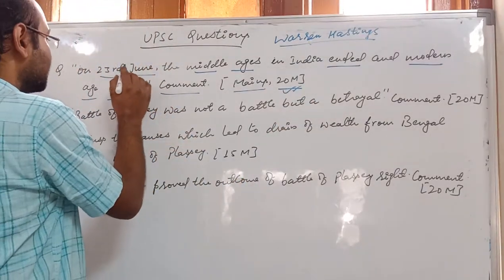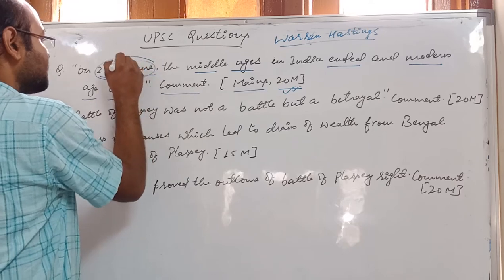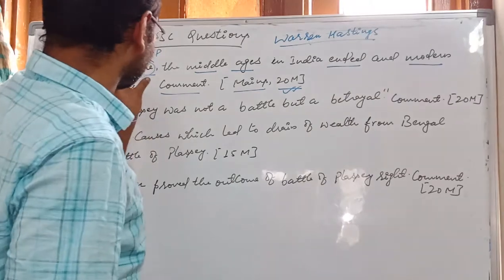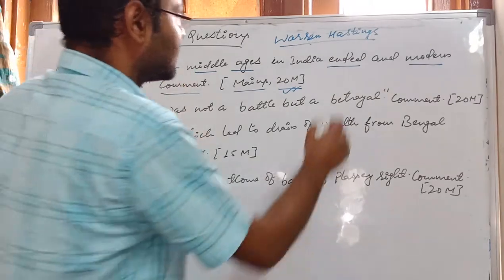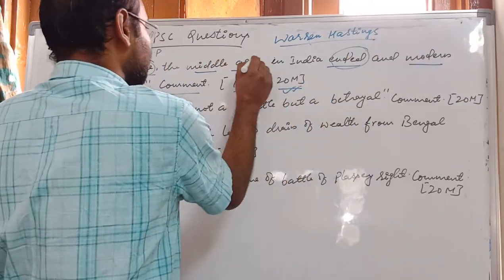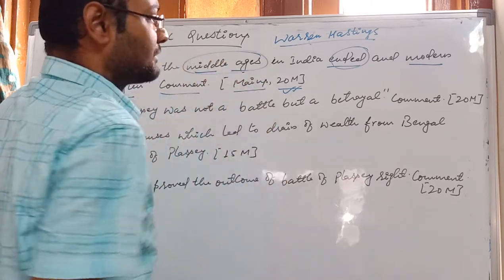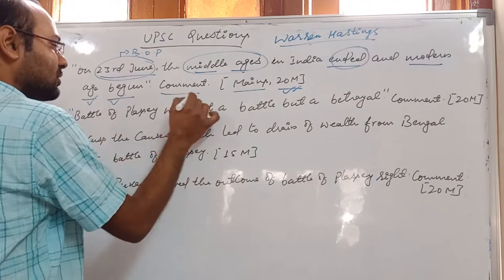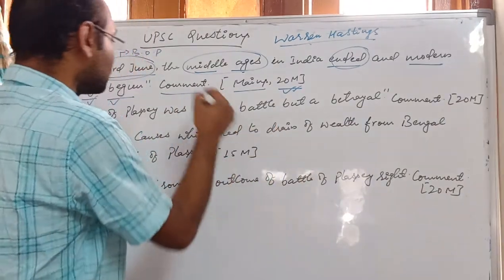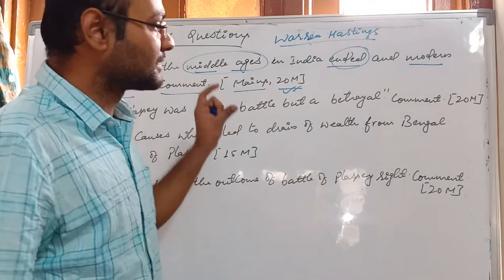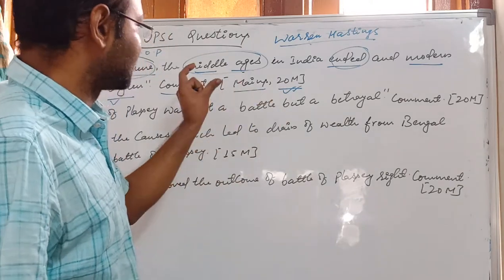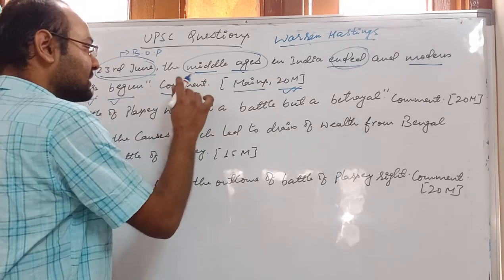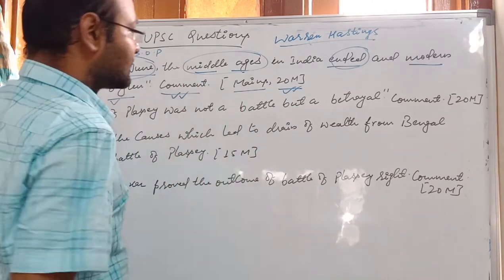The question was: 'On 23rd June, the Middle Ages in India ended and the modern age began — Comment.' The date itself signifies the Battle of Plassey. The question asks how the Battle of Plassey led to the ending of the medieval era and the beginning of the modern age. Since it asks to 'comment,' we must see both pros and cons, not merely affirm the statement.